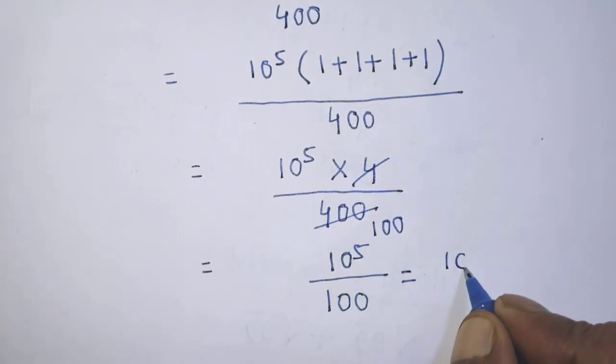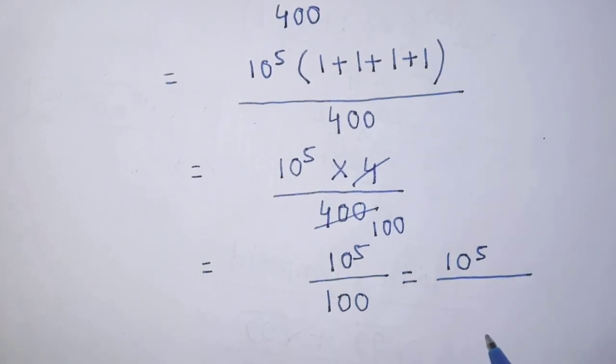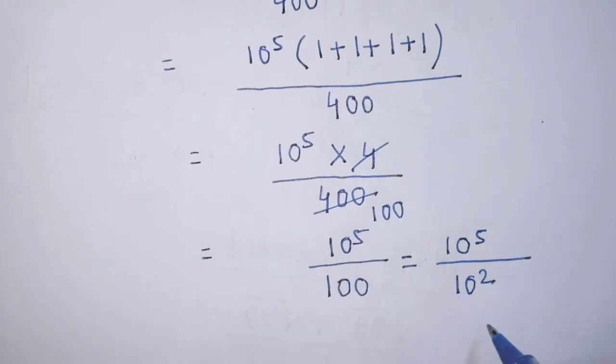In the place of denominator, we have to write the exponential form of 100, so it will be 10 to the power 2.